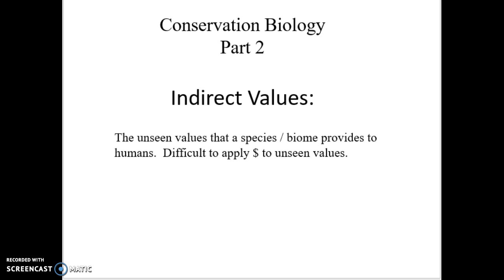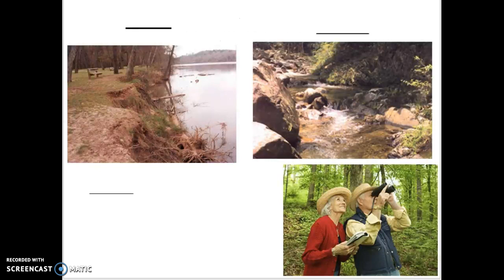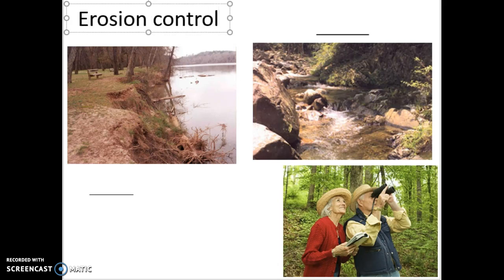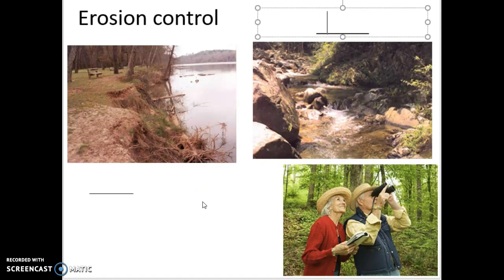That's what we want to do with a lot of other things — look at the indirect value. Think about these trees in the picture here. There's a direct value: I can chop them down, split it, and sell the firewood for a couple hundred dollars. But what about erosion control? Those trees stabilize that stream bank, that river, that lake. If I take the trees out, the bank erodes, changing the water quality, decreasing habitat quality, and causing big ecological problems. But I can't put a dollar value on preventing that ecological collapse.